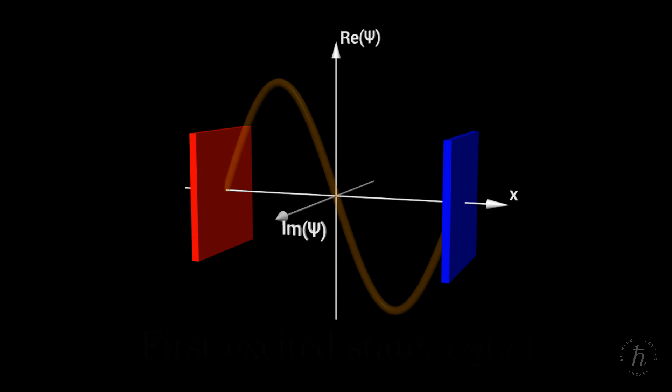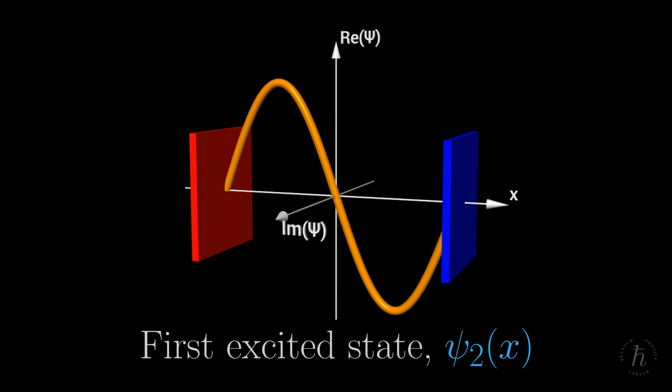The next stationary state, the first excited state, psi 2, corresponds to one full period of a real sinusoidal wave, again vanishing at both walls.